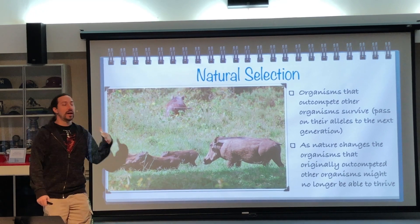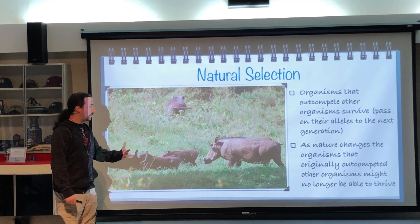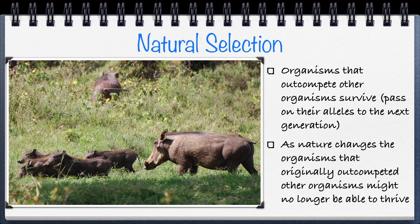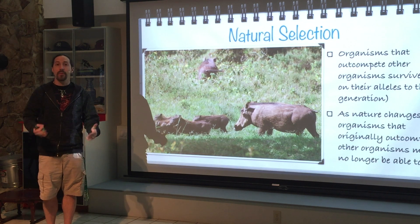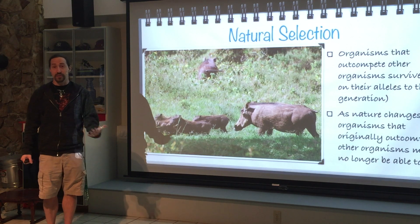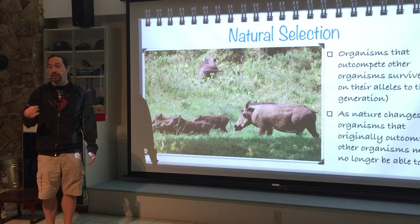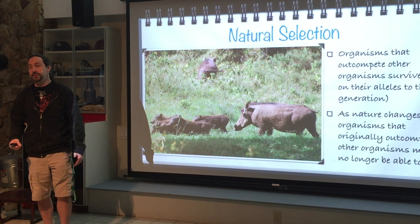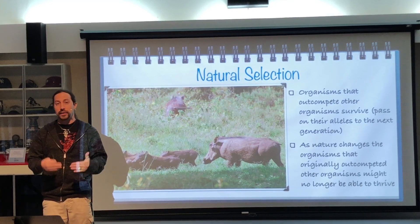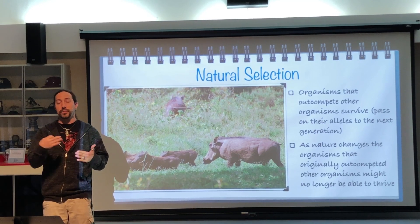Organisms have to compete with each other, and sometimes one organism will out-compete another. As the natural world changes, traits that used to be favored might end up being disfavored. Those favored traits will be passed on to the next generation, while any trait that is not favored will not get passed on because those organisms will not survive long enough to pass their genes to the next generation.